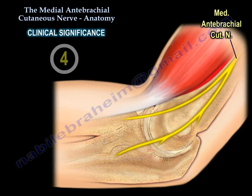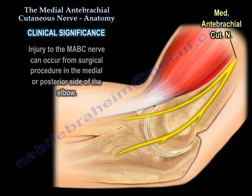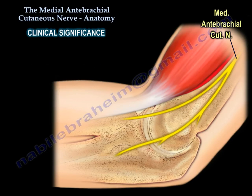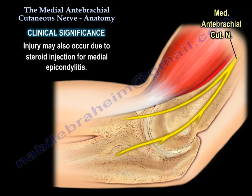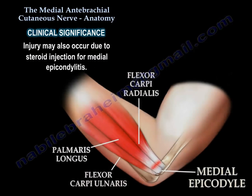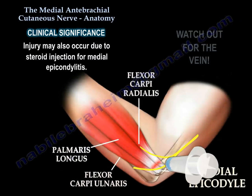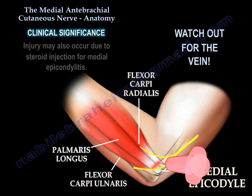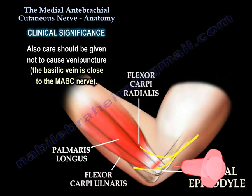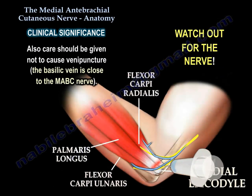Clinical Significance #4: Injury to the nerve can occur from surgical procedures on the medial or posterior side of the elbow. Injury may also occur due to steroid injection for medial epicondylitis. Care should also be taken during venipuncture, as the basilic vein is close to this nerve.